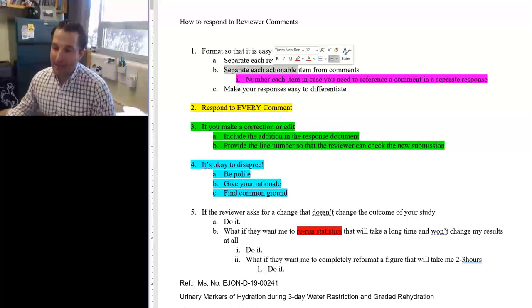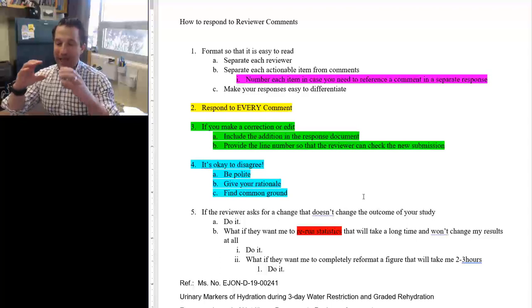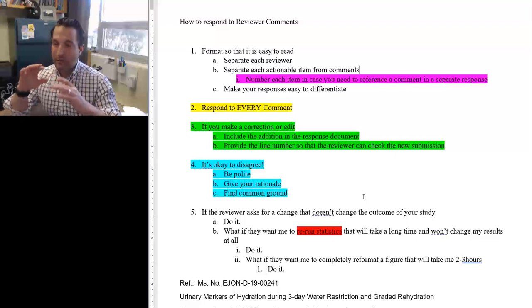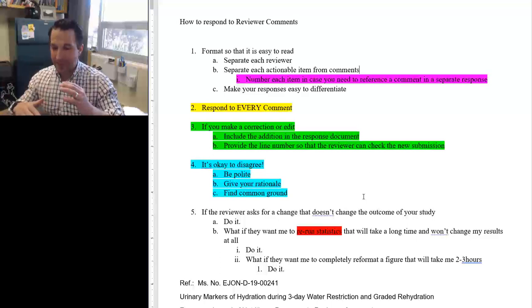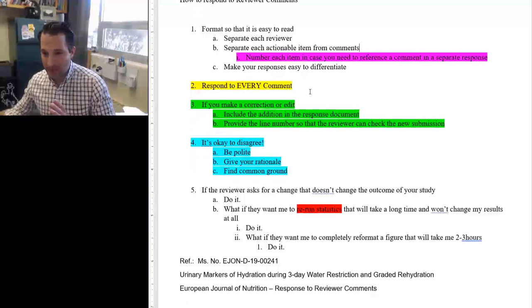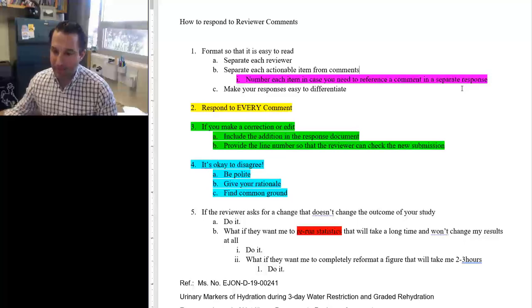Make their job easy. So, the first way to do that is to format it so it's easy to read. Separate each reviewer. Here's reviewer one, and then after I finish responding to reviewer one, I am going to make sure to put on a separate page, reviewer two. Next, separate each comment into actionable items. Sometimes you will get a block of text as a single comment from a reviewer. And within that block of text, they will have four or five different points that you can address. Separate that out.